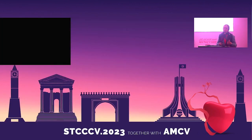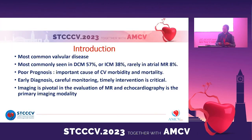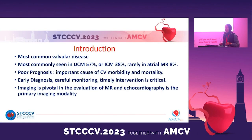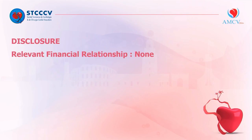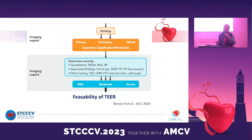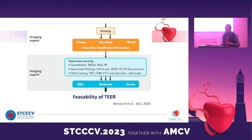So we have to perform an early diagnosis, careful monitoring, and timely intervention. I have no disclosures. When we do an echocardiography, we have to answer three or four questions: the first is the mechanism and etiology of MR; then we have to quantify the MR; and we have to study the feasibility of edge-to-edge repair.